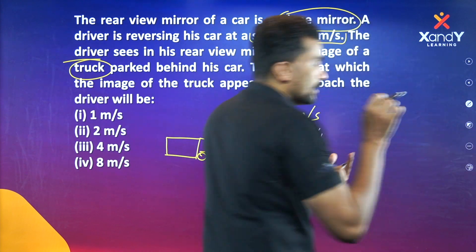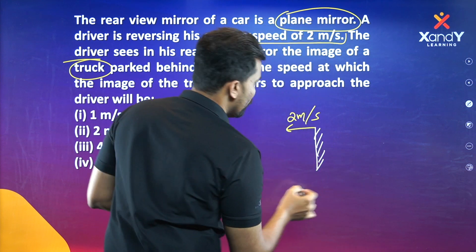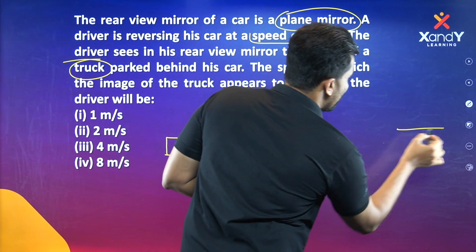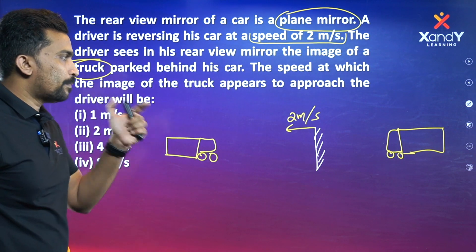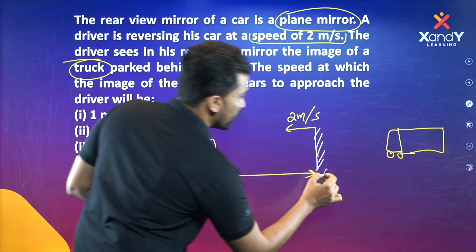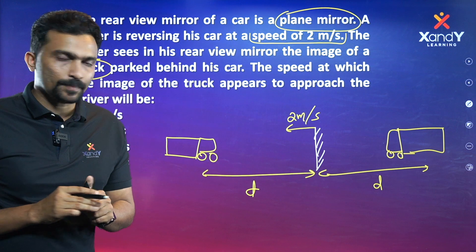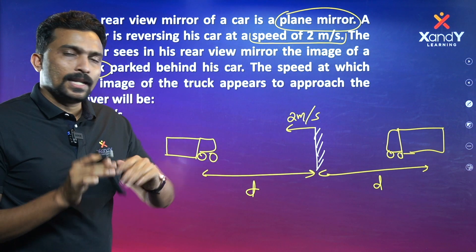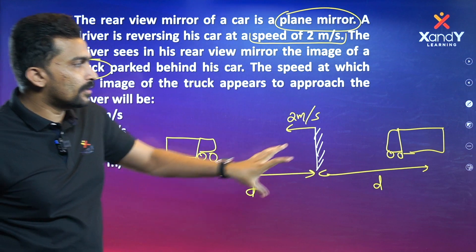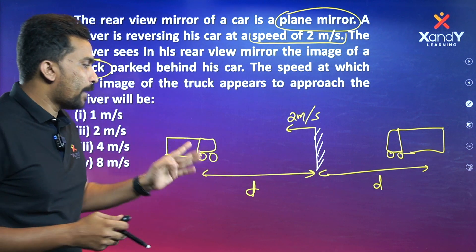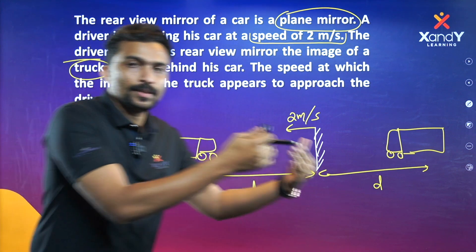Looking at the previous properties of the plane mirror: the image is formed at the same distance behind the mirror as the object is in front. So if we move the mirror 5 meters closer to the truck, the image also moves 5 meters — the image distance equals the object distance.